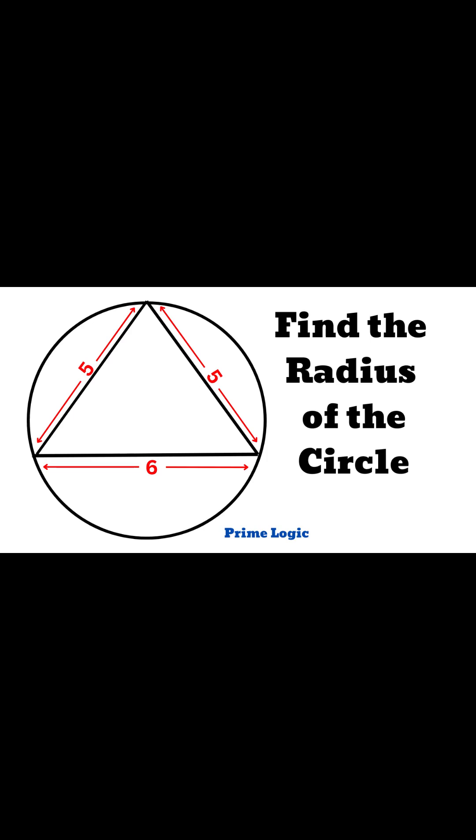Alright, what is up guys? Here is your daily dose of challenge on Prime Logic. Can you find the radius of this circle with an inscribed isosceles triangle? In other words, the circle is called the circumcircle of this inscribed triangle.